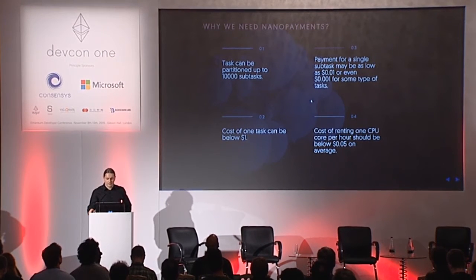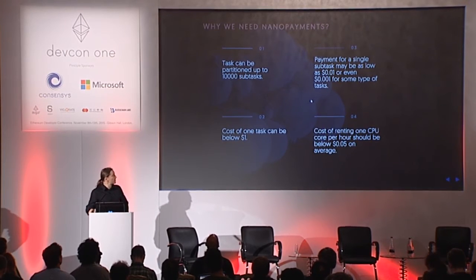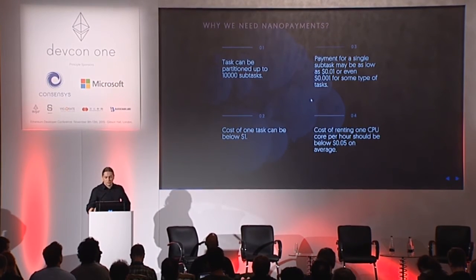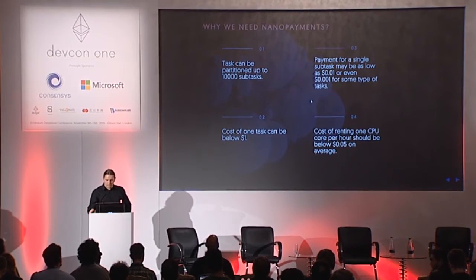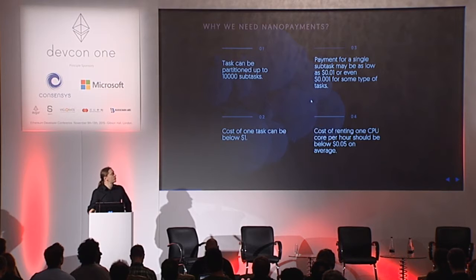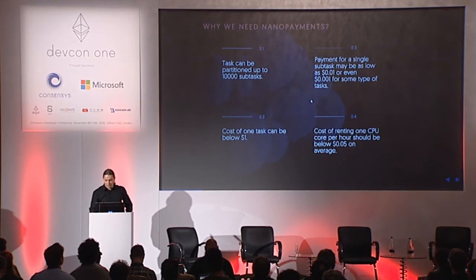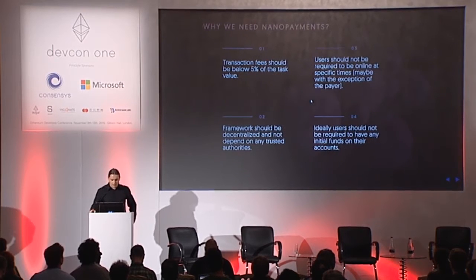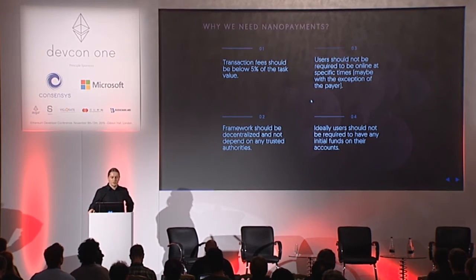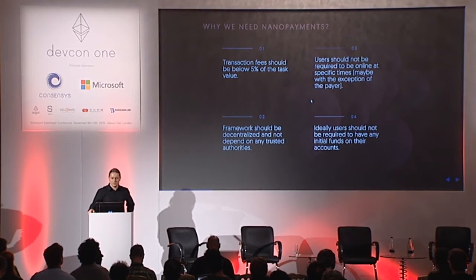For example, a single task can be split into up to ten thousand sub-tasks where the cost of one task is below $1. We try to achieve payments as small as one cent for a simple sub-task, but we believe we can approach even one cent of a cent. To make it attractive to users, we believe the cost of renting one CPU core shouldn't exceed five cents on average per hour.